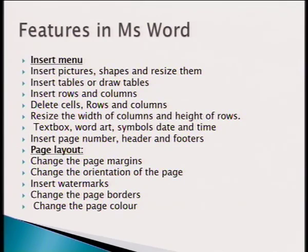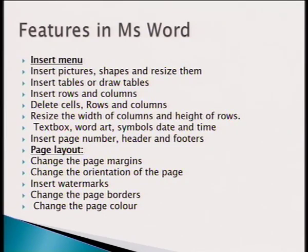In the Page Layout menu, you can change the page margins — defining where you want your typing to begin and end. You can change the orientation of the page, making it landscape or portrait. You can also insert watermarks to define what type of document it is. You can change the page borders — for example, adding a box border around your page — and you can change the page color, whether you want it to appear in pink, red, or whatever you choose, all done under Page Layout.